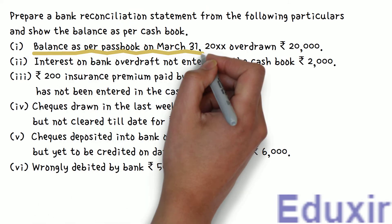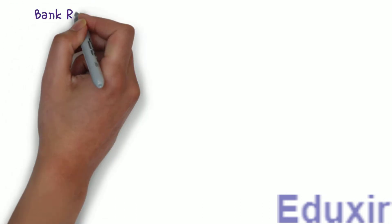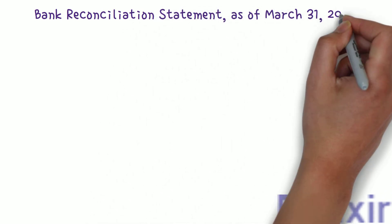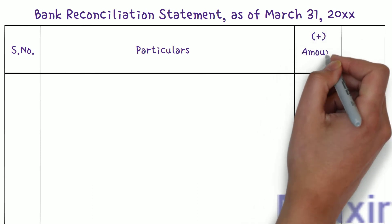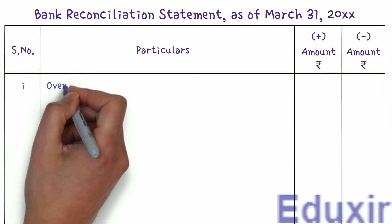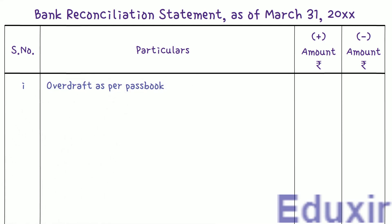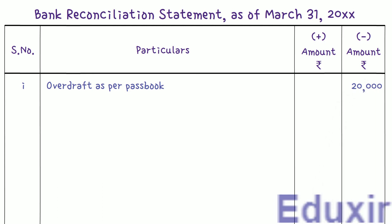Here it is given that the overdraft balance as per the passbook is ₹20,000. The overdraft balance means there is a debit balance in the passbook — we call this the unfavorable balance of the passbook. We need to find the balance in the business cashbook. In the bank reconciliation statement, we write the particulars as 'Overdraft as per Passbook' and enter ₹20,000 in the minus amount column.